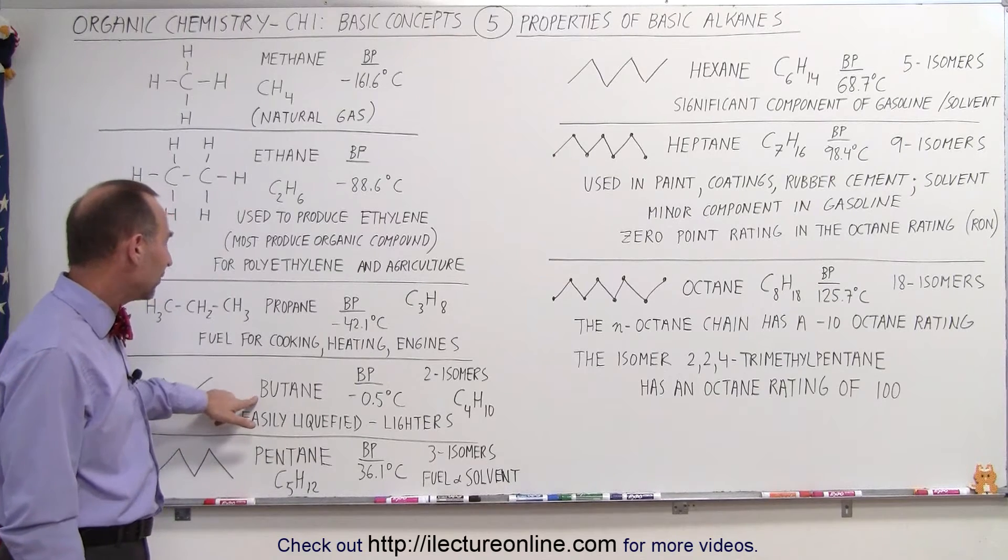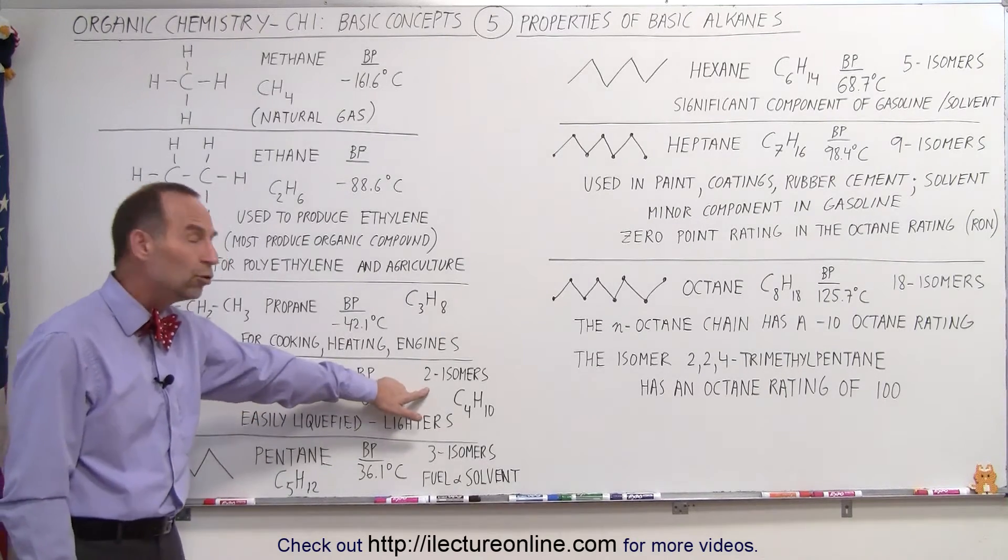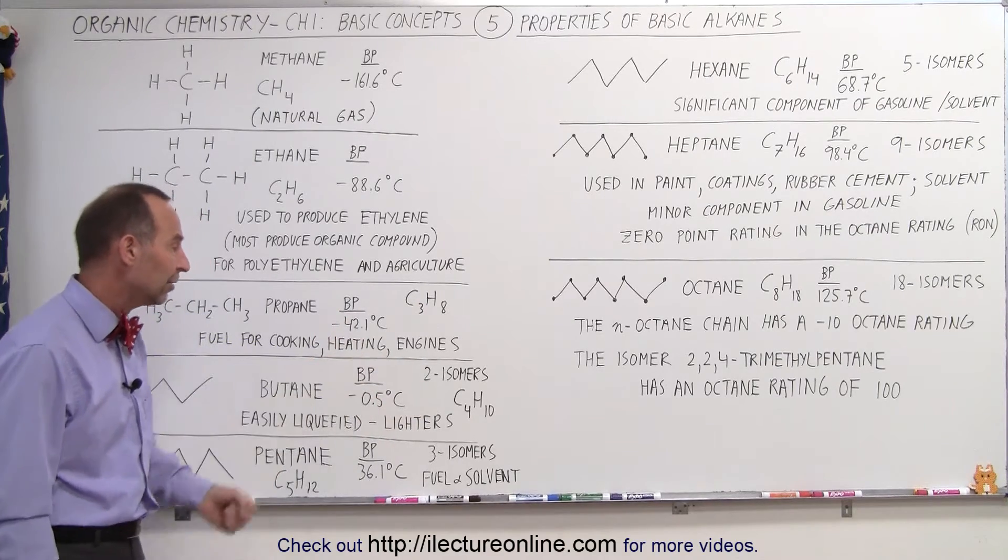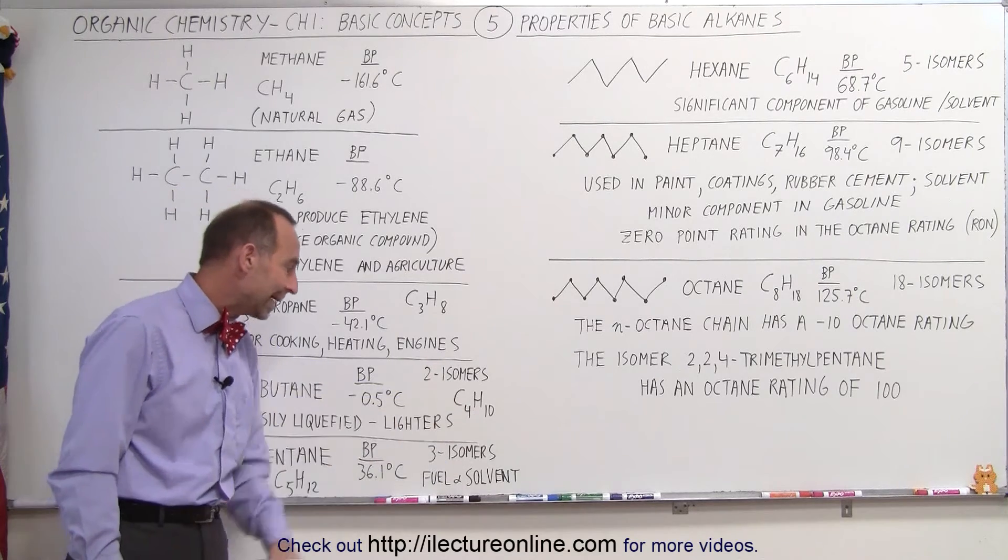Notice that this is the first of the alkanes that has enough carbon atoms so that there can actually be two isomers and we'll look later what those isomers are. Notice the chemical formula is C4H10.